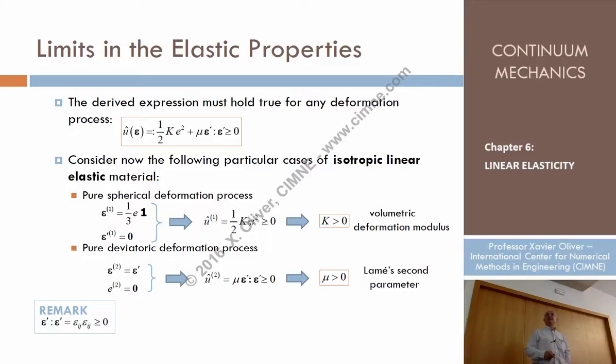K is a material property that is constant. It doesn't depend on the strain. If this is greater than zero, and E squared and two are positive values, what can we say about K? K is positive. The deformation modulus has to be positive.